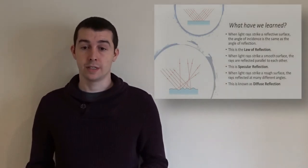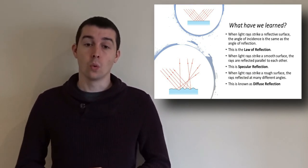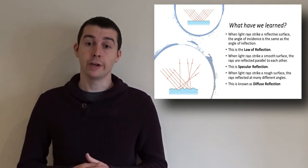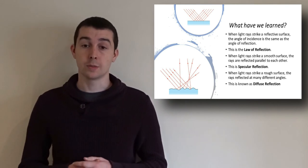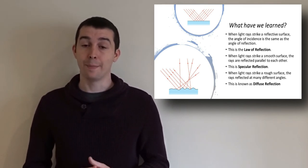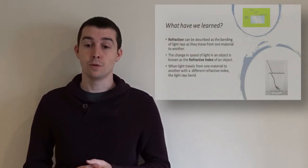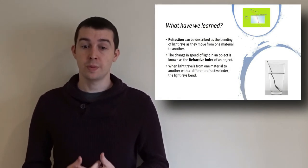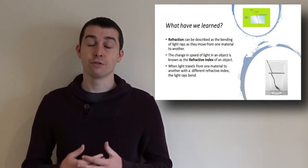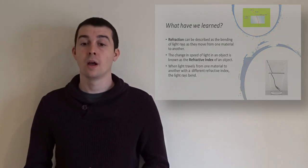In conclusion, when light rays strike a reflective surface, the angle of incidence is the same as the angle of reflection — this is the law of reflection. When light rays strike a smooth surface, the rays are reflected parallel to each other, known as specular reflection. When light rays strike a rough surface, the rays are reflected at many different angles, known as diffuse reflection. Refraction is the bending of light rays as they move from one material to another, and the change in the speed of light in an object is known as the refractive index. When light travels from one material to another with a different refractive index, the light rays bend.